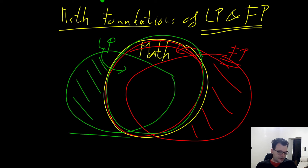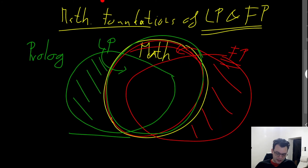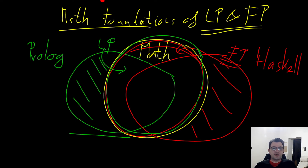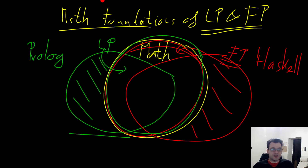If you're not familiar with logic programming, a very prominent example is the programming language Prolog. For the functional part, a well-known example is Haskell. If you are not really fluent in these languages or don't even know them, that's not a problem. I will just show you one or two examples of how a program looks in such a language, but the important part is to give denotational semantics for both of these two paradigms.